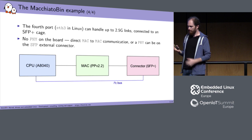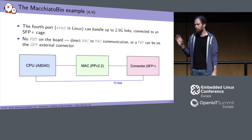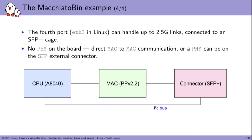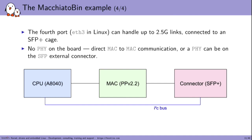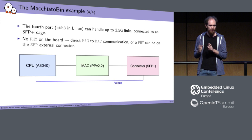The port ETH3 in Linux can handle up to 2.5 gigabits and is connected only to an SFP cage with no PHY. So the MAC is directly connected to the SFP cage, allowing a direct MAC-to-MAC connection. Alternatively, a PHY can be plugged in at runtime within the SFP connector.